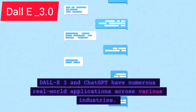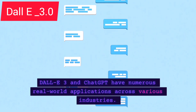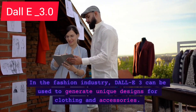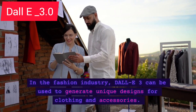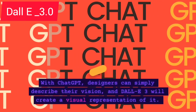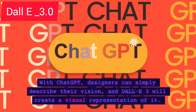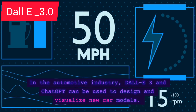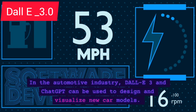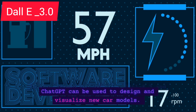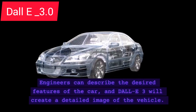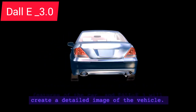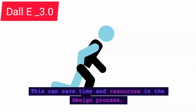DALL-E 3 and ChatGPT have numerous real-world applications across various industries. In the fashion industry, DALL-E 3 can be used to generate unique designs for clothing and accessories. With ChatGPT, designers can simply describe their vision, and DALL-E 3 will create a visual representation of it. DALL-E 3 and ChatGPT can also be used in automotive design to visualize new car models. Engineers can describe the desired features of the car, and DALL-E 3 will create a detailed image of the vehicle, saving time and resources in the design process.